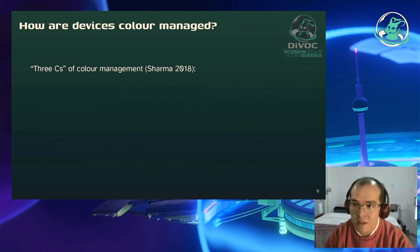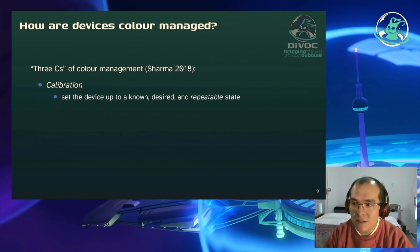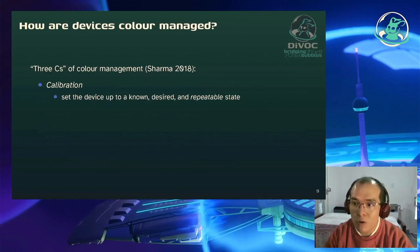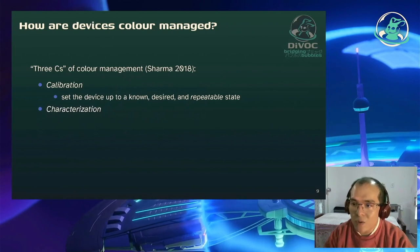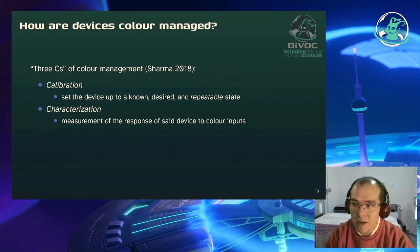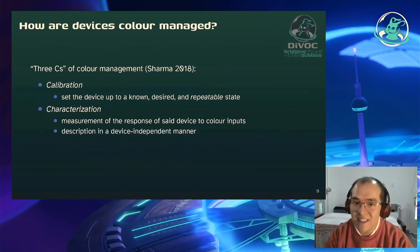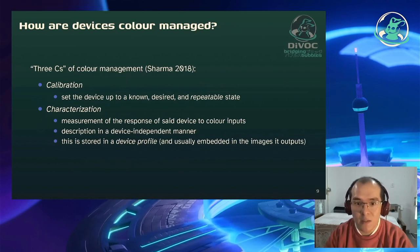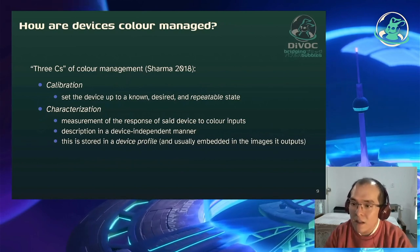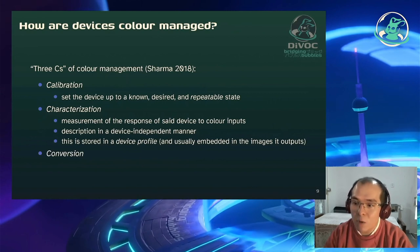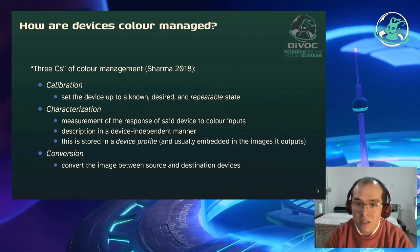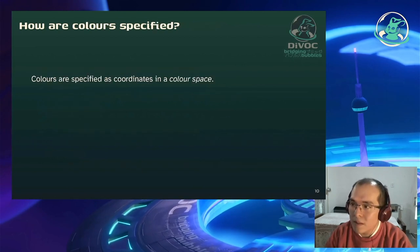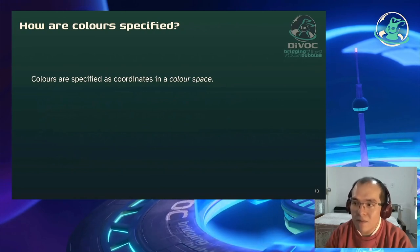Wie wird Farbmanagement verwaltet? Da müssen wir die drei Cs beantworten. Das erste ist Kalibrierung: wie kann man ein Gerät so einrichten, dass es einen reproduzierbaren Zustand hat? Zweitens die Charakterisierung: die Messung davon, wie ein Gerät auf Farbeingaben antwortet, und das auf eine geräteunabhängige Art in einem Geräteprofil abzulegen. Und zuletzt die Umwandlung – der wichtigste Schritt: ein Bild von einem Quellprofil umzuwandeln, sodass es auf das Zielprofil passt.